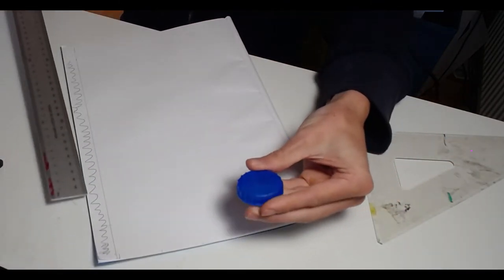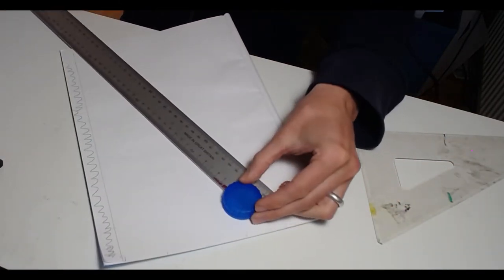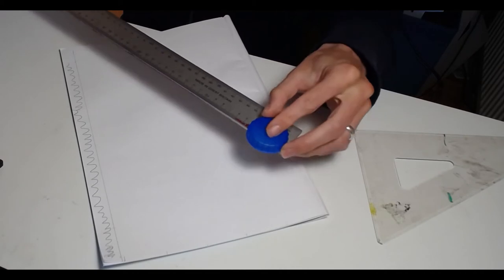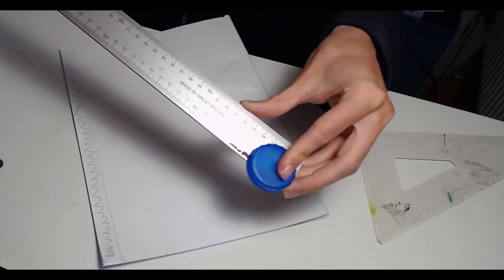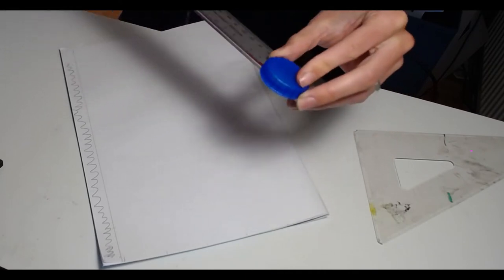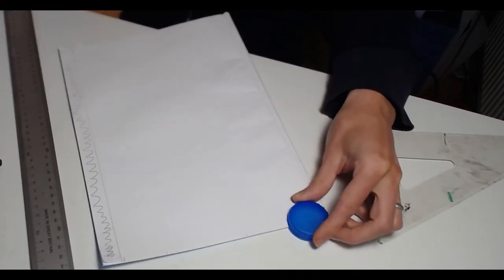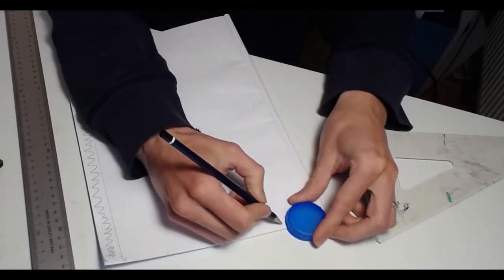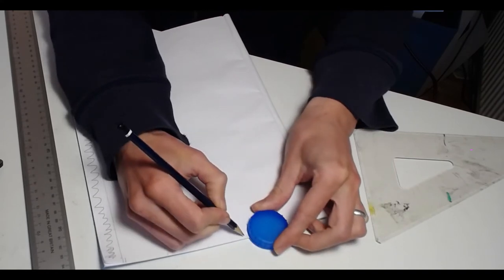If you have a ruler, we're going to be measuring four centimeters and making a grid out of four centimeters. If you do not have a ruler, I have a bottle cap there, a milk bottle cap specifically, and that is four centimeters in diameter.